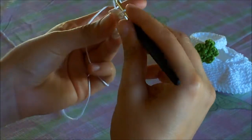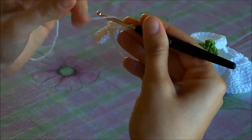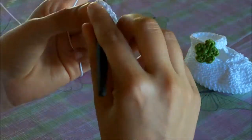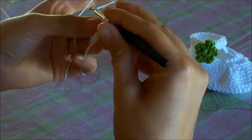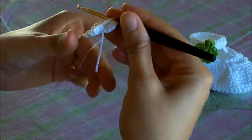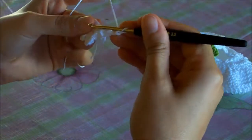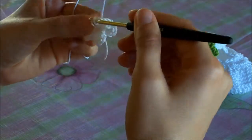We are going to start working on the last sheet. Begin to chain 2, 1 single crochet into the ring, 1 single crochet into the ring. Chain 2, and slip stitch into the ring.